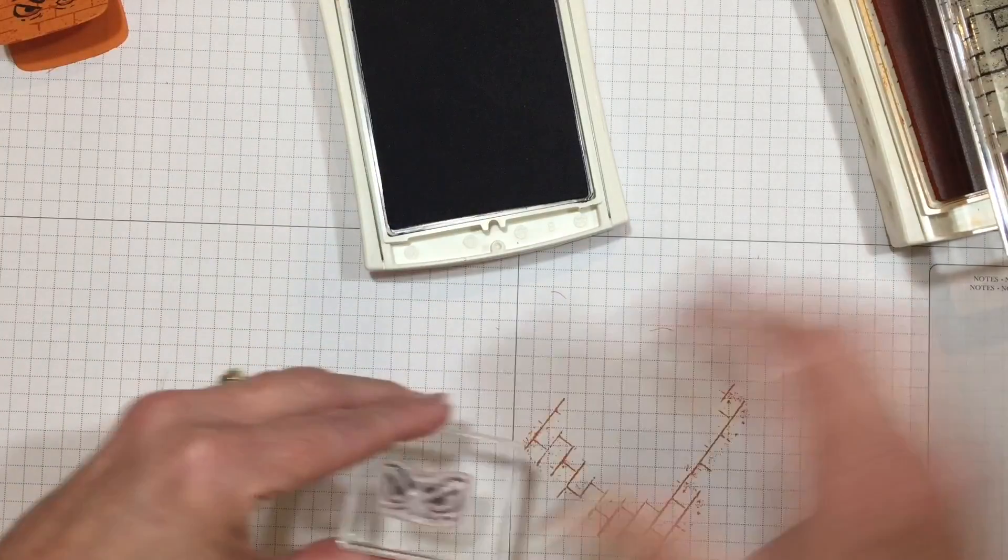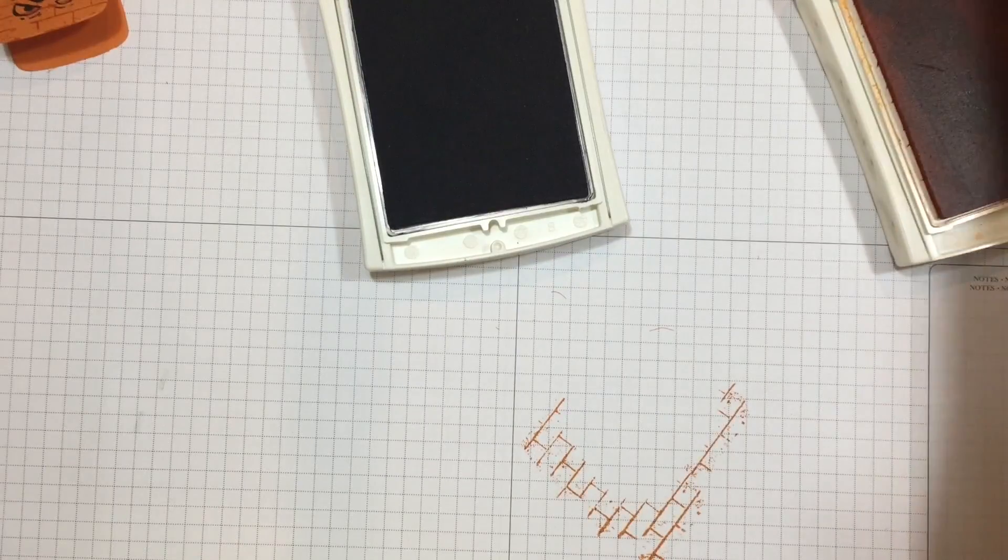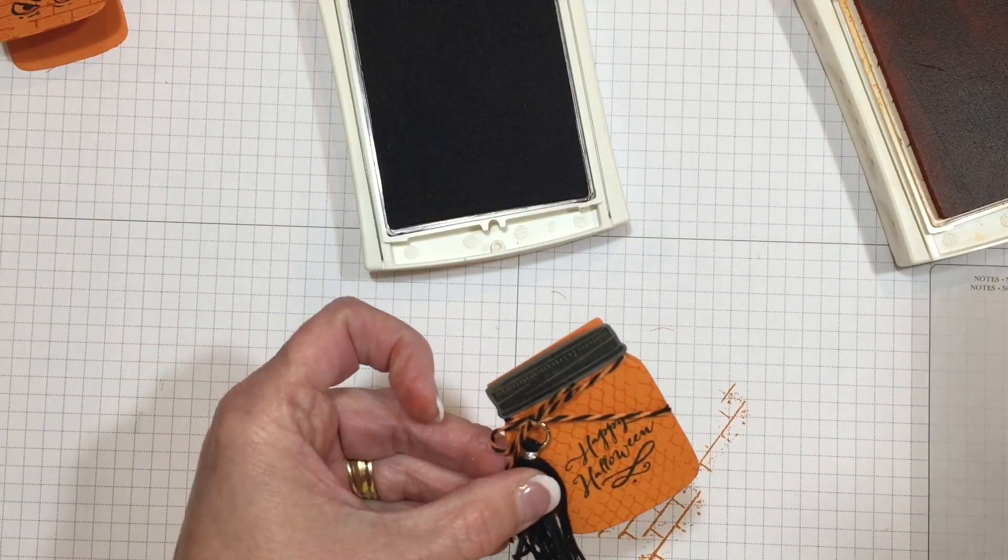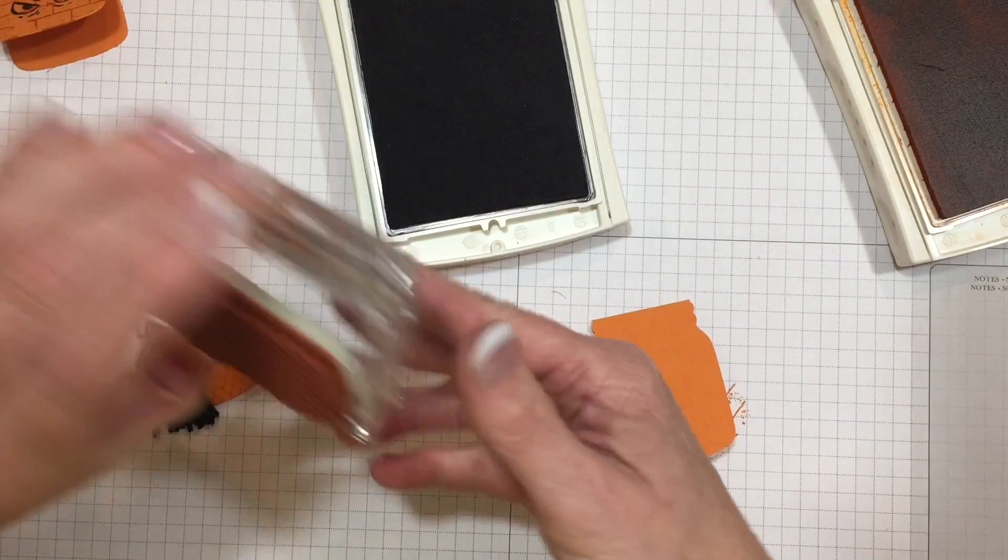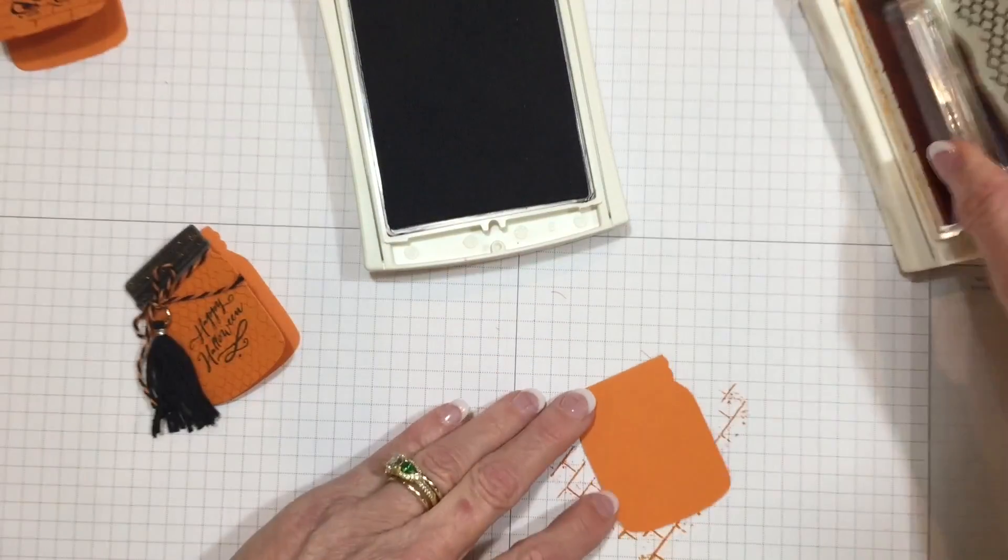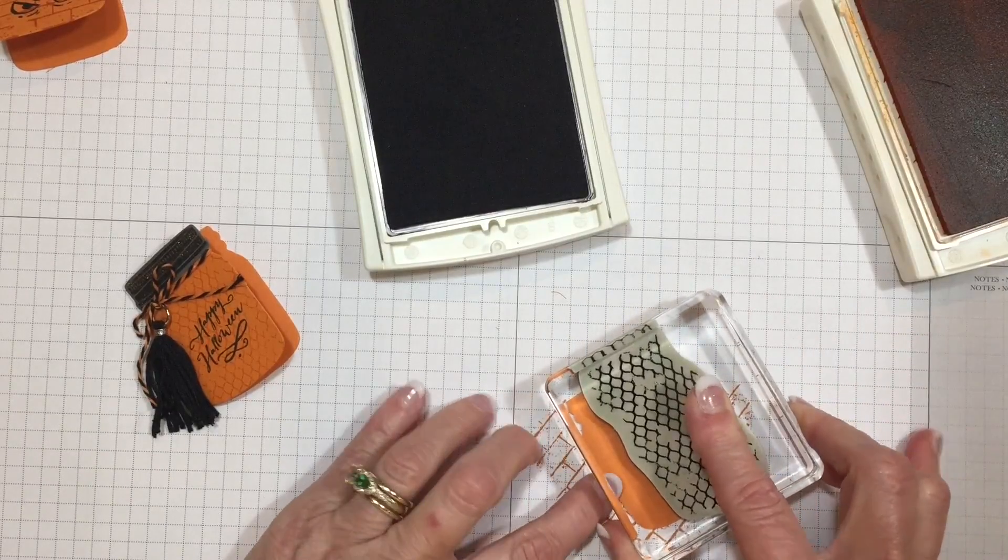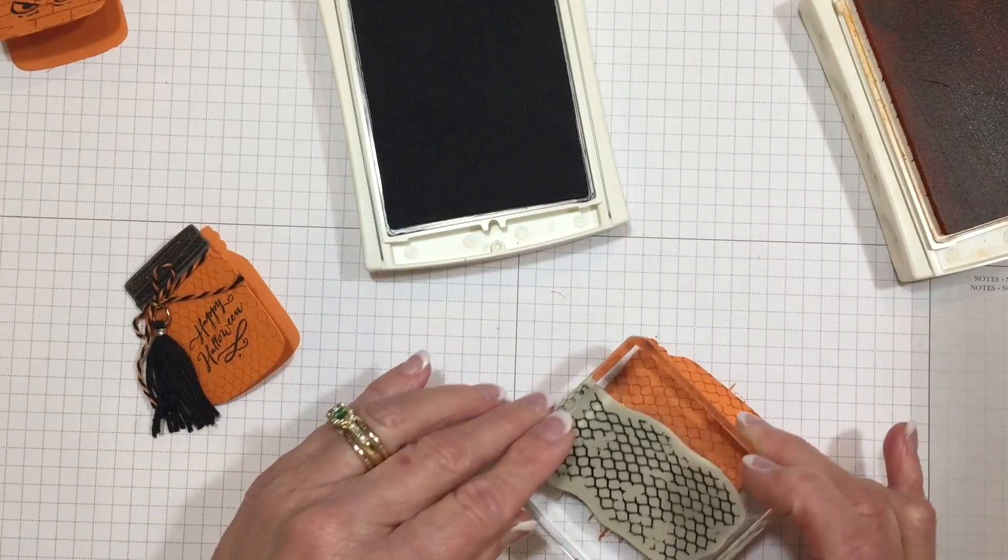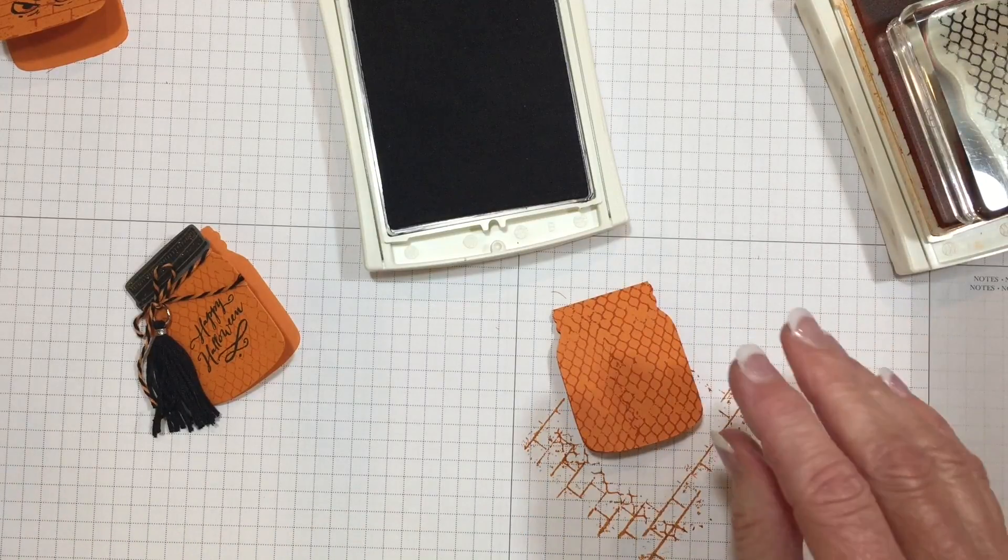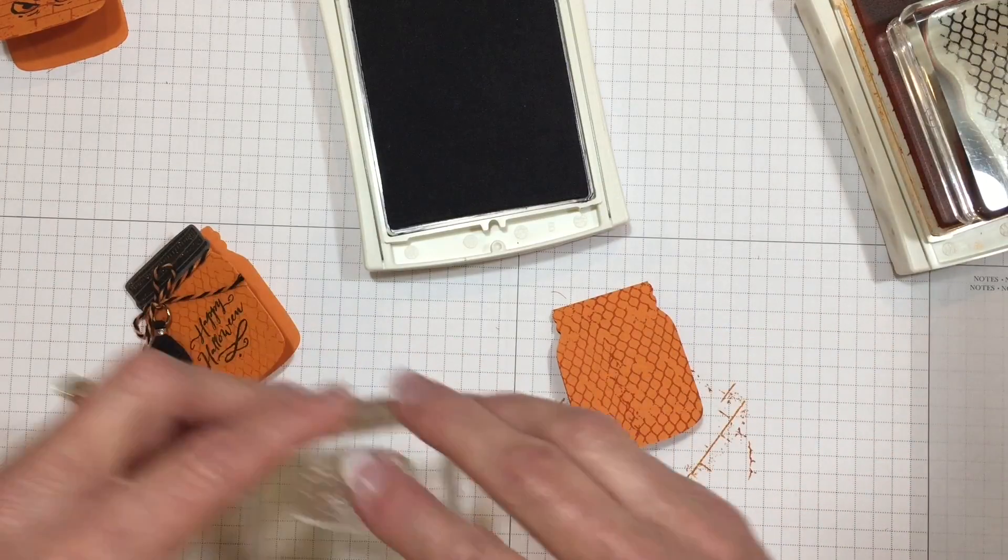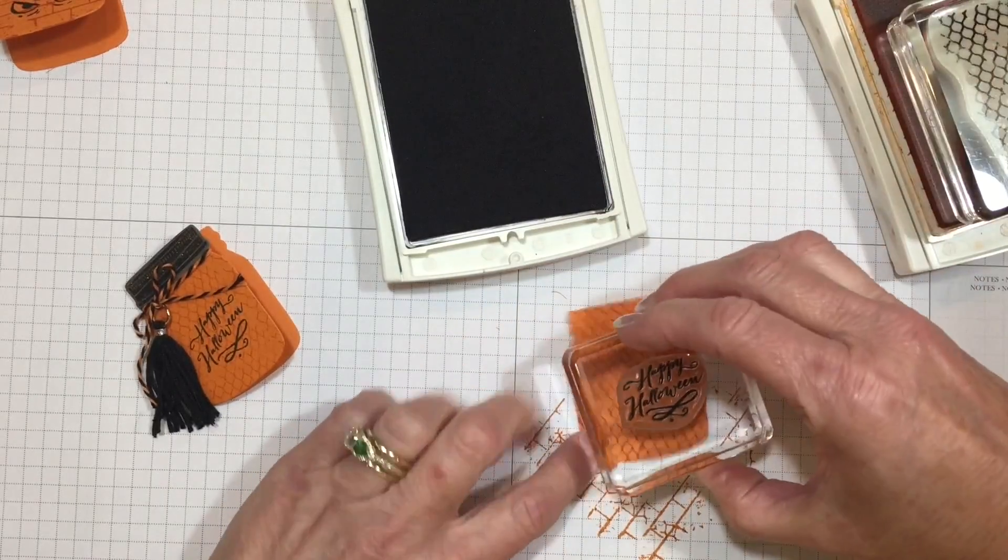For the medium size tag, we're actually going to use some of the netting, and then we'll use a Happy Halloween on top.